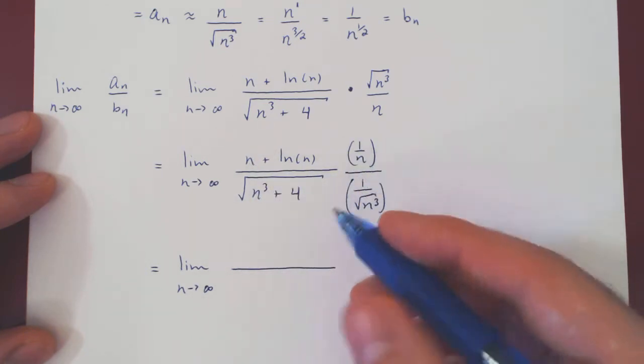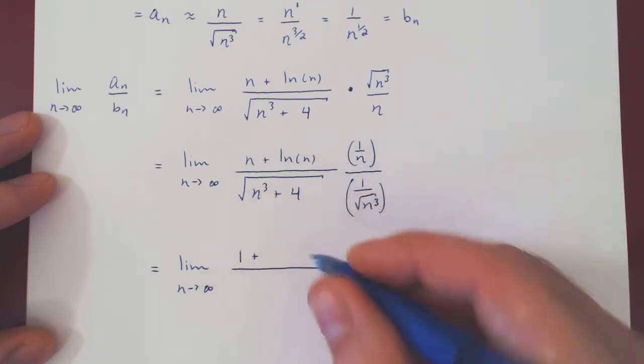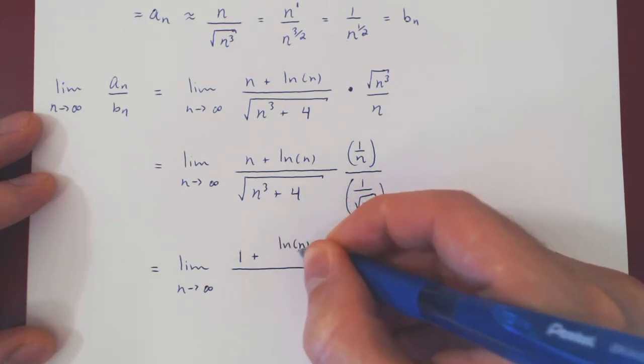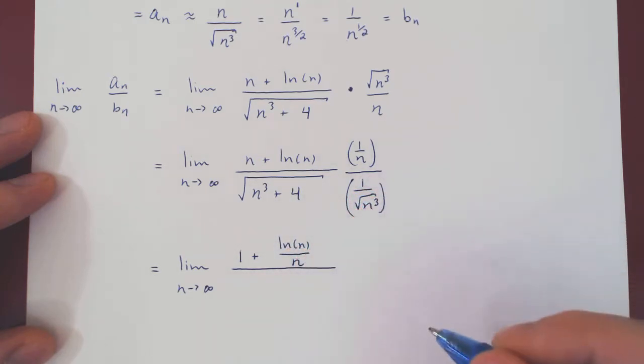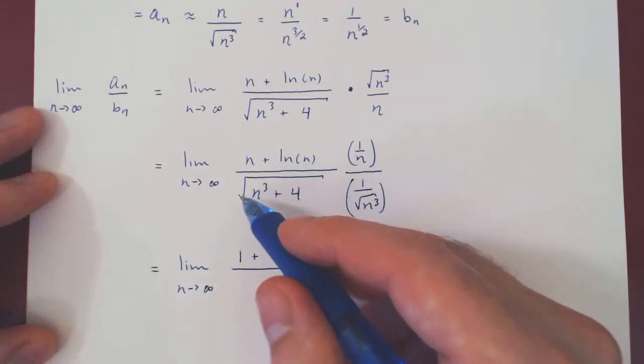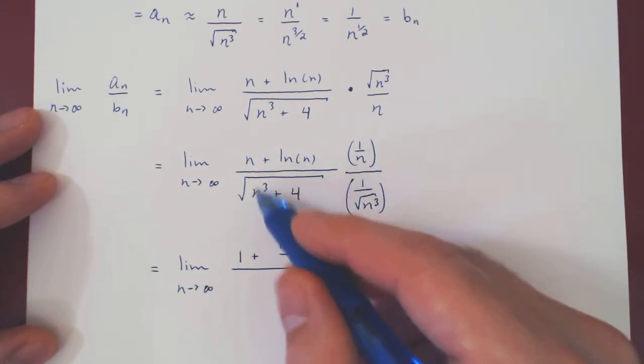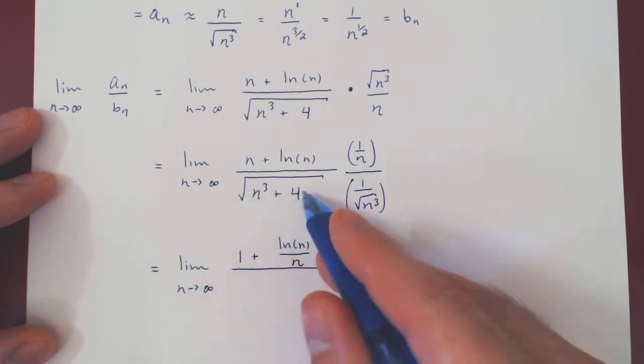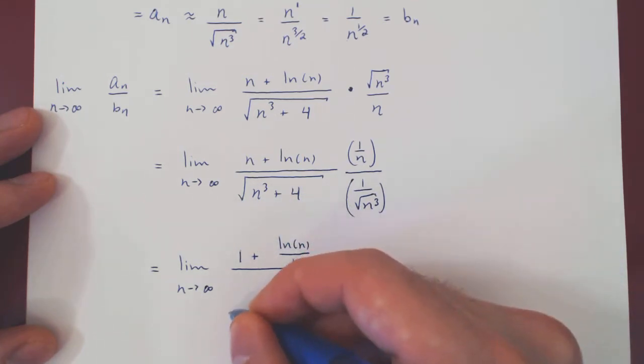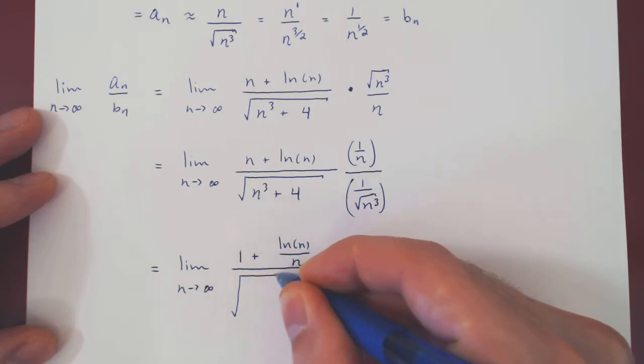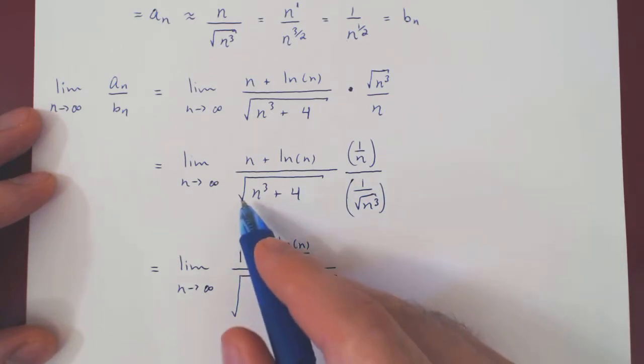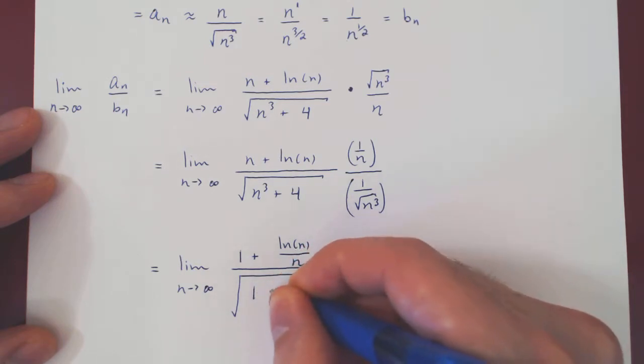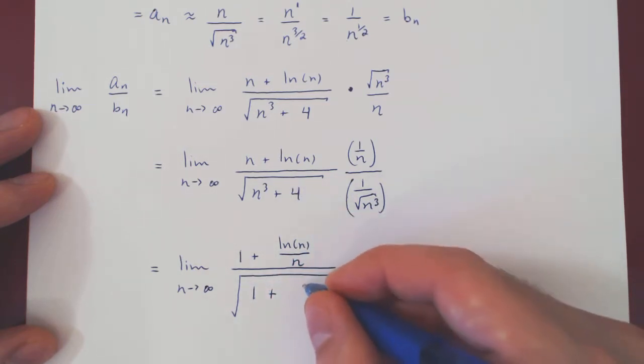So, n times 1 over n is 1, ln over n times 1 over n, ln over n over n, over, and now we can combine the two square roots. In other words, we have the root of something over the root of something, so a quotient of square roots is the square root of the quotient. This is the root of n cubed over n cubed, that is simply 1 plus 4 over n cubed.